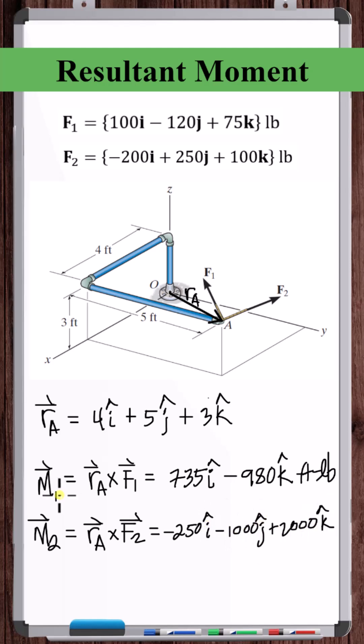The resultant moment of the two forces is M1 plus M2. 735 minus 250 is 485. Minus 980 plus 2000 is 1020, and that's the resultant moment.